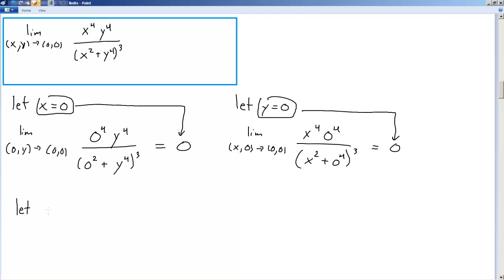In other words, we'll let y equal mx, where m is any real number, because that's the equation of all lines passing through the origin. There's no y-intercept. The y-intercept is zero. So it's just y equals mx. So let's go through and test that. Our limit will be x, and then mx, because everywhere we see y, we're replacing it with mx, goes to zero, zero.